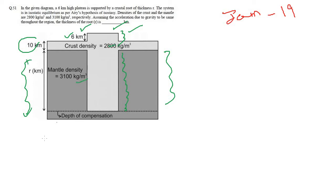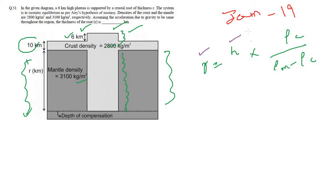We need to apply the formula directly. There is a direct formula which gives us the root. The thickness of the root r is given as the height of the topography multiplied by density of crust, divided by density of mantle minus density of crust. Everything is already given, we just need to apply it.